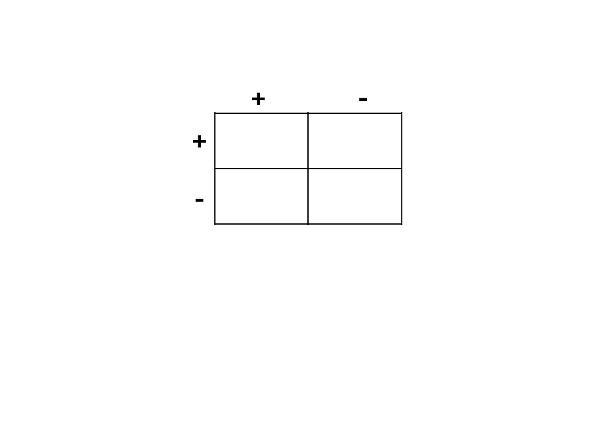This is important because you have to know what the axes represent. Across the top, you write 'reality,' and on the left side going from top to bottom, you write the word 'test.' The left side represents what the test shows — whether the test was positive or negative for the disease. The top represents reality: if it's positive, you actually have the disease; if it's negative, you actually don't.